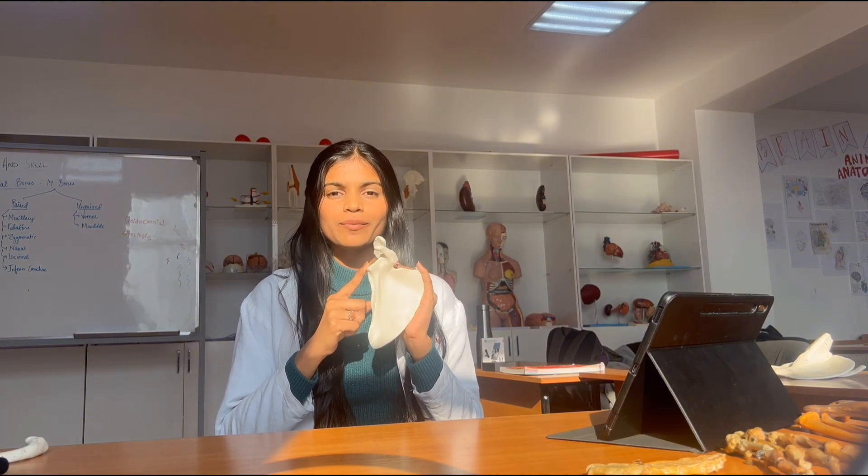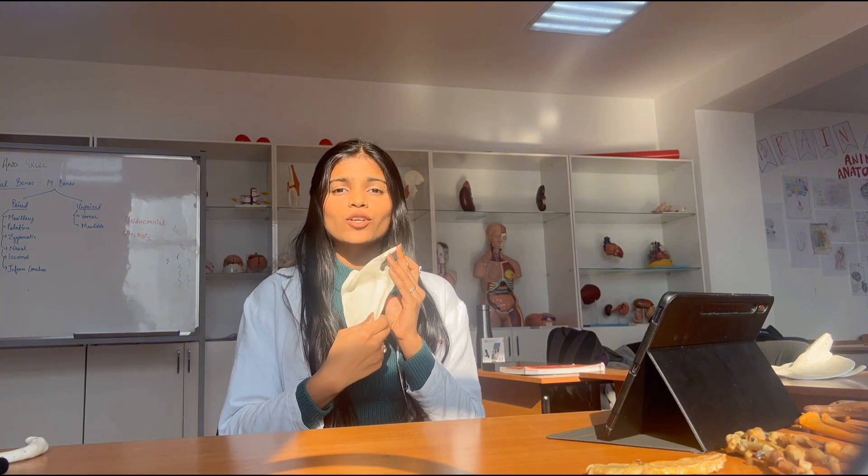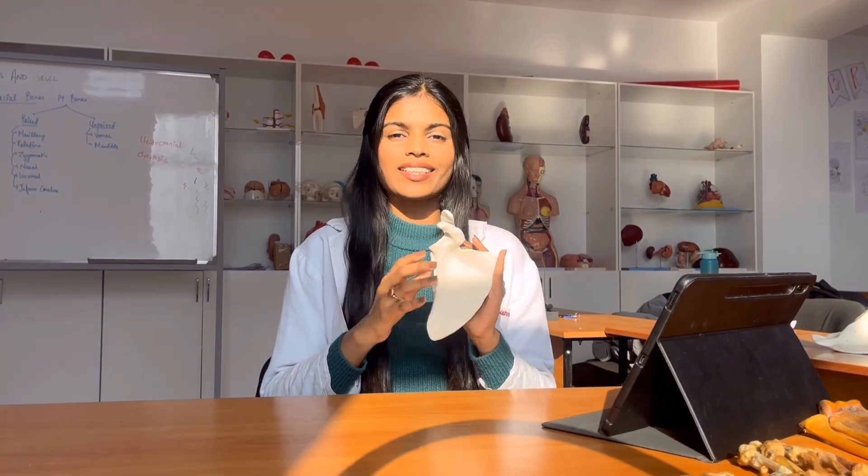The scapula is a flat-shaped bone present on the dorsal (posterior) side of the body. To determine its position: the glenoid cavity, which articulates with the humerus, is always lateral, whereas the spinous process is always posterior. Regarding articulations: the head of the humerus articulates with the glenoid cavity forming the glenohumeral joint; the acromion process of the scapula articulates with the lateral end of the clavicle to form the acromioclavicular joint. There are approximately eight ossification centers in the scapula — one primary and seven secondary.